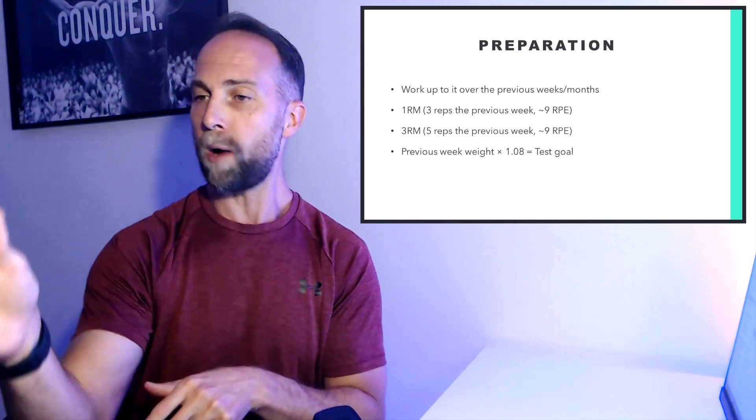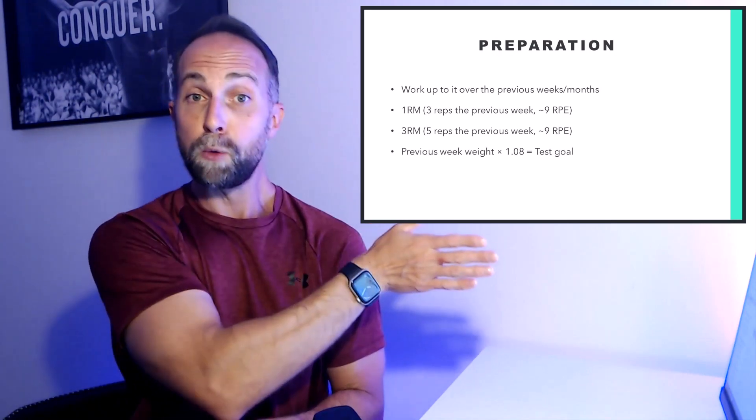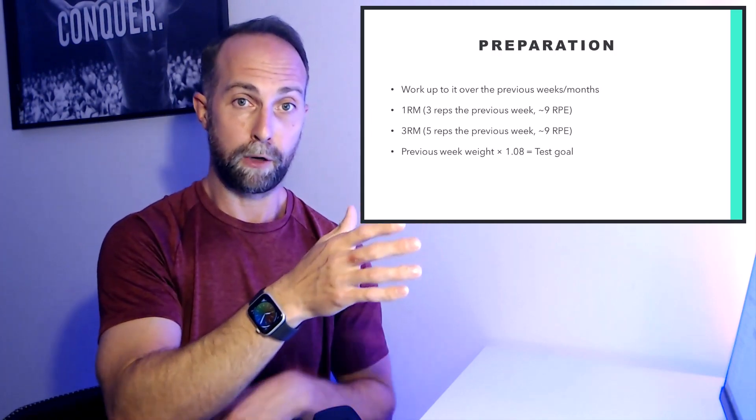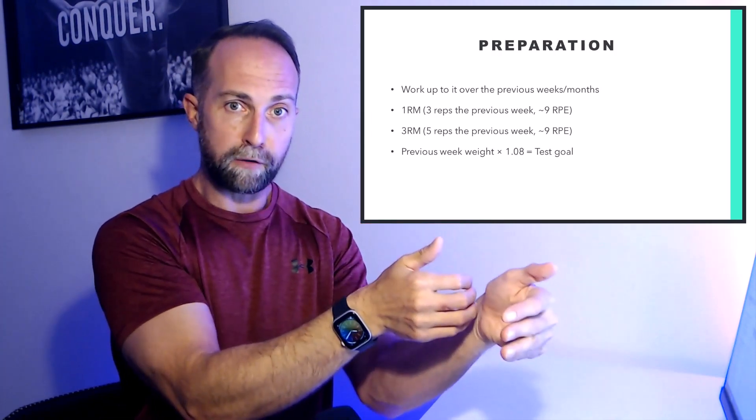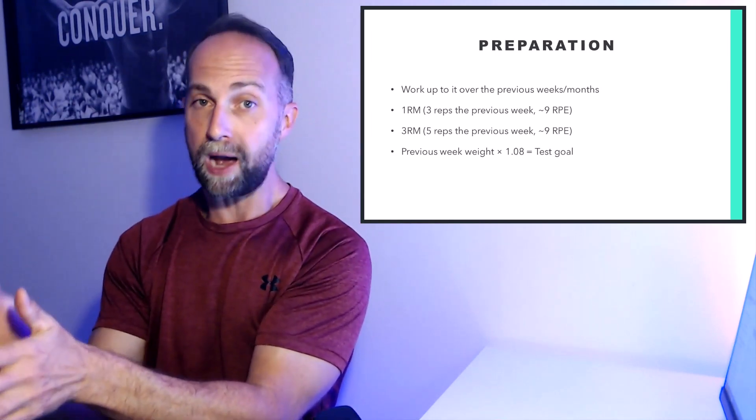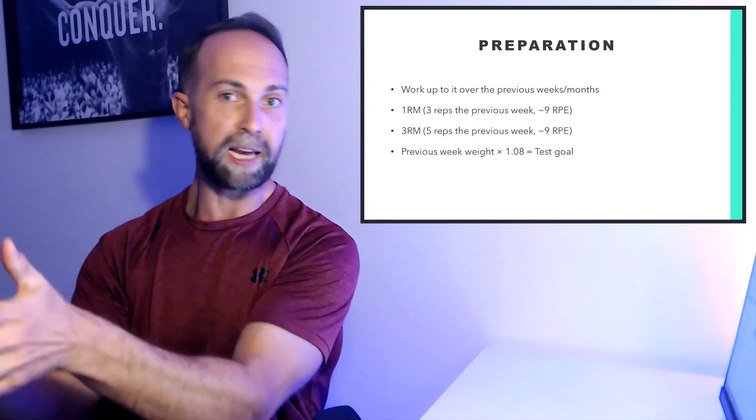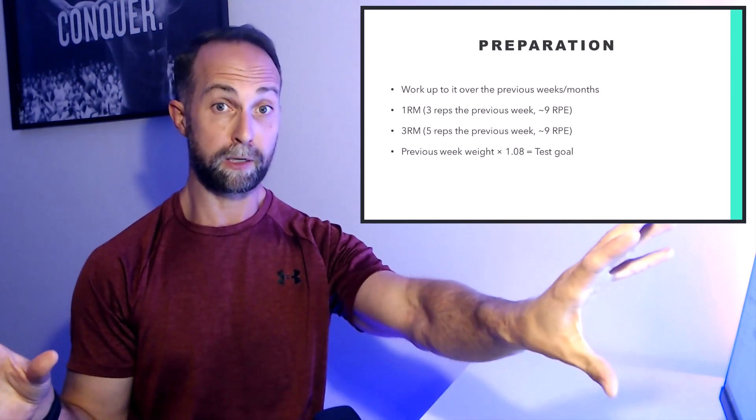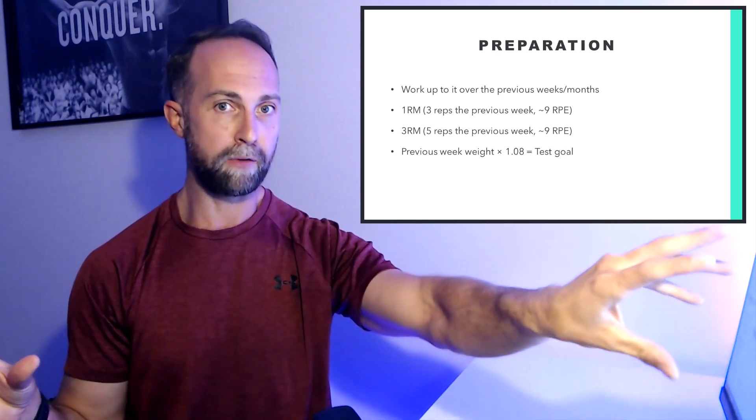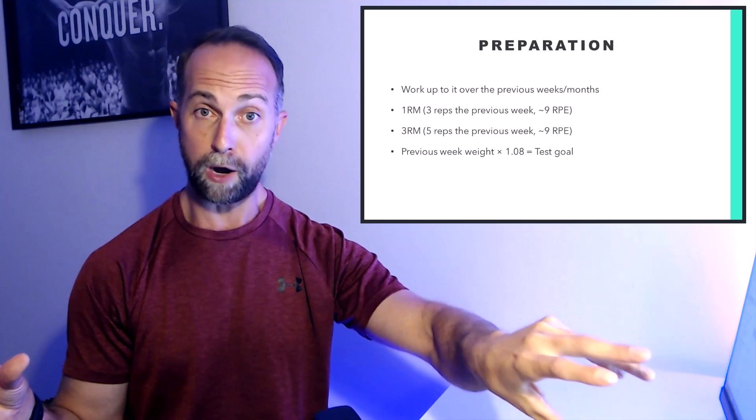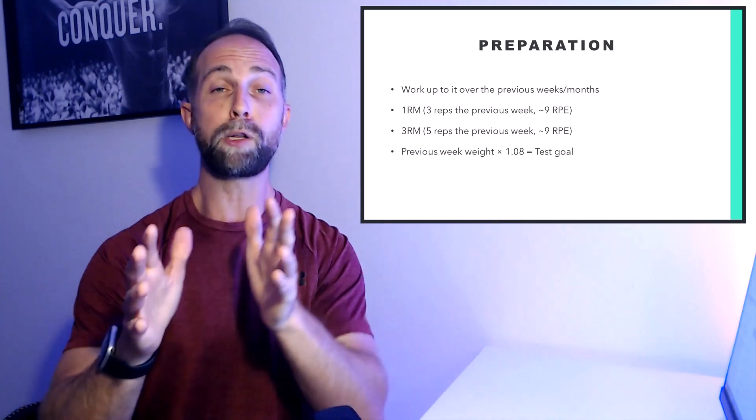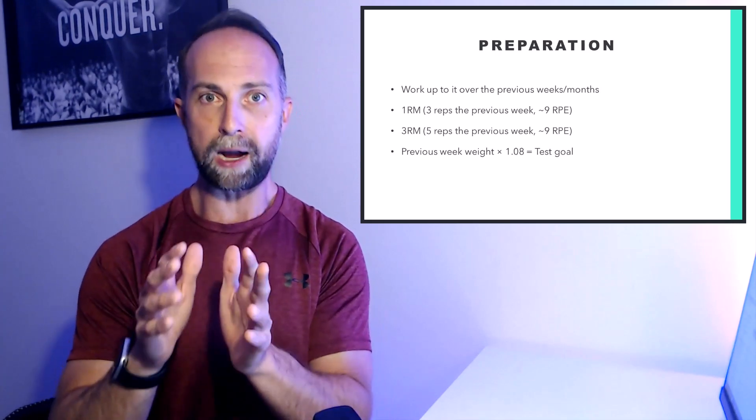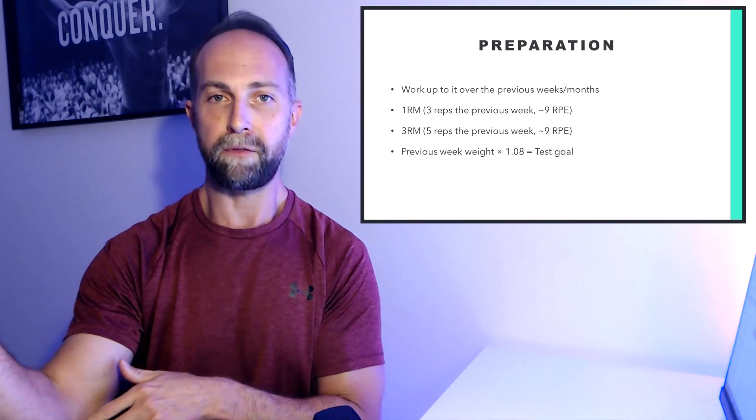That'll typically be in a set that has a couple more reps than what you're going to do for your RM test. For example, if you're going to do a three RM test, the previous week you would have done a set of five reps with a rep in reserve of one or an RPE of nine. So a set of five close to failure the previous week, leading up to a three RM test the next week. Same with the one RM: you're going to do a one RM test this week; the previous week, you will have done three reps for a set with a nine RPE or a one rep left in reserve.